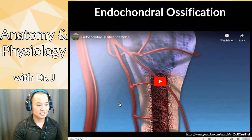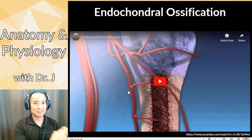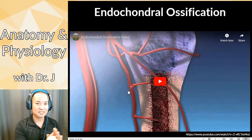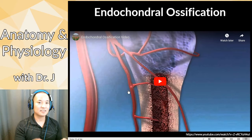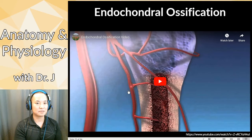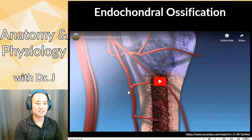More blood vessels penetrate the cartilage and form more bone. Remember those blood vessels are carrying all the calcium, phosphate, and carbonate. As all these minerals and ions come in, the osteoblasts use those minerals and the nutrients carried by blood to form new collagen — until eventually you have a fully formed bone, with no more cartilage except at the very ends.